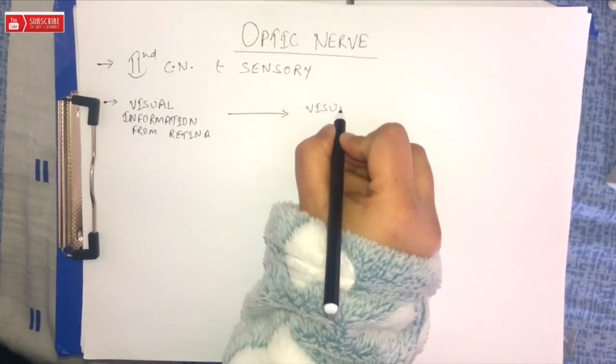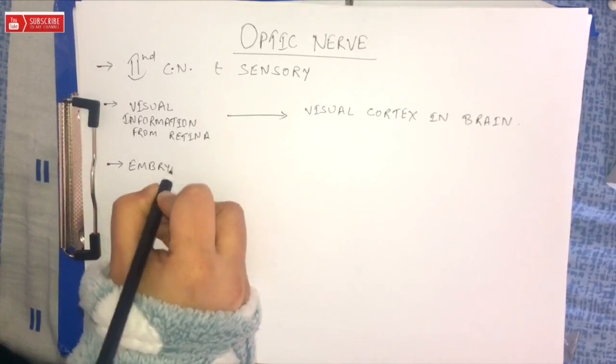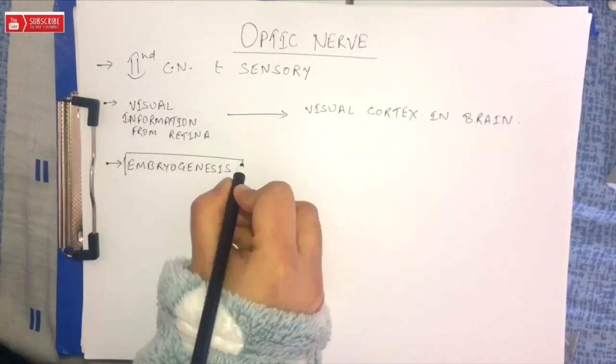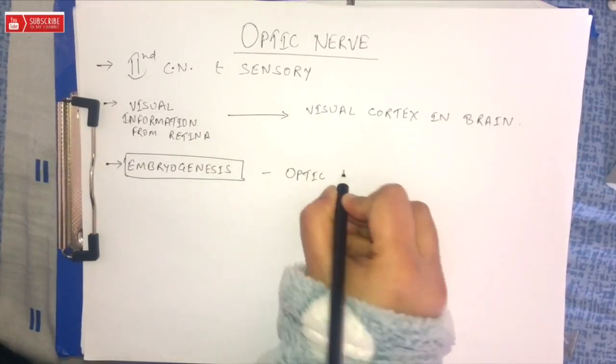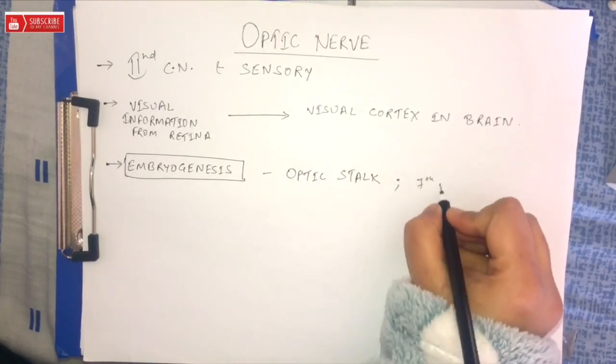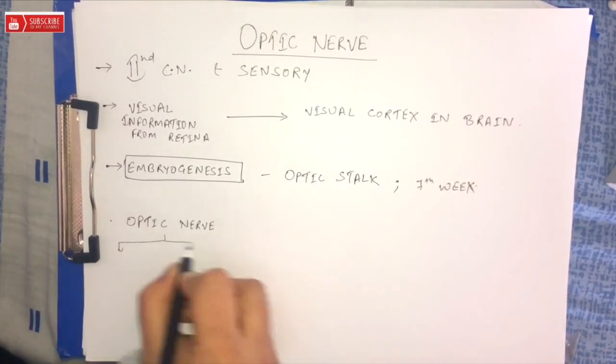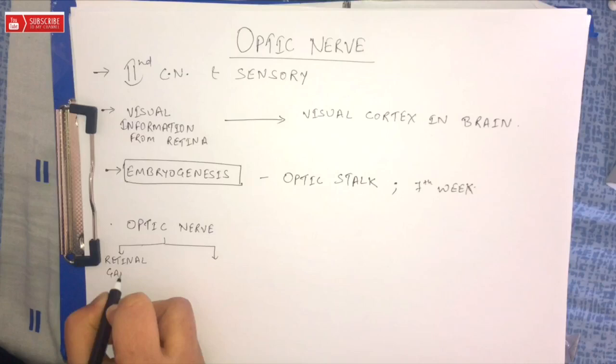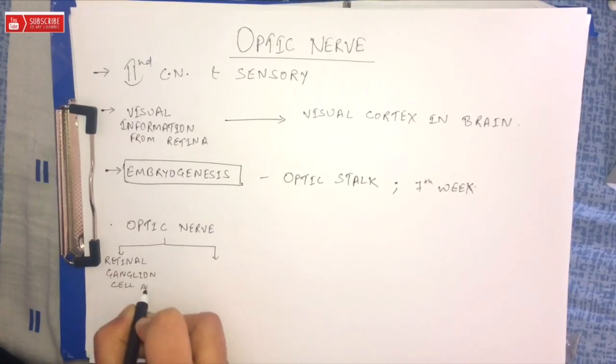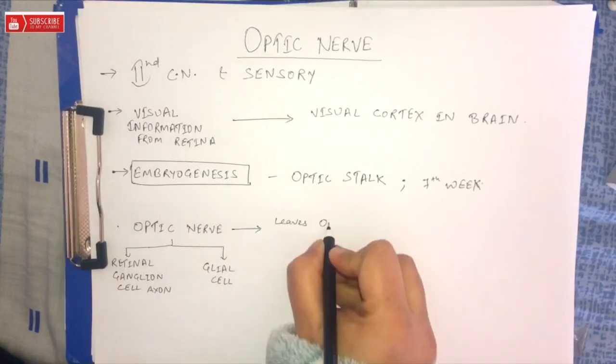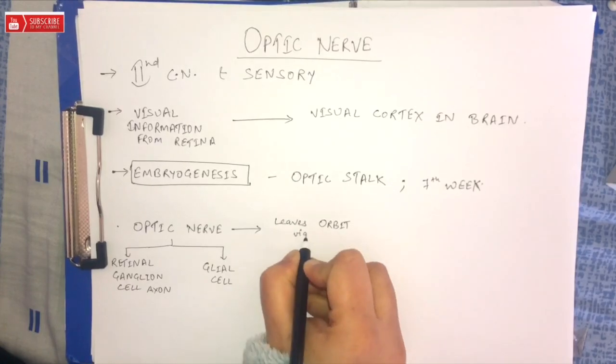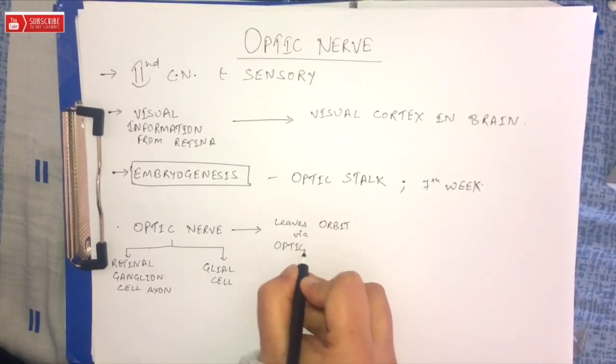In humans, the optic nerve is derived from the optic stalk during the seventh week of embryonic development and is composed of retinal ganglion cell axons and glial cells. The optic nerve leaves the orbit by the optic canal.